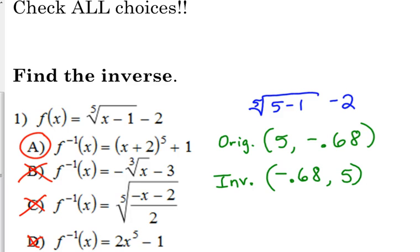So inverses, think opposites. Inverses, think opposites. So if you start with the fifth root, the opposite of that would be a fifth power. If you started with x cubed, the opposite of that would be a cubed root. Started with x squared, square root, vice versa. But then worst case scenario, put 5 into your original. Put that answer into your answer choices and see which one gives you 5 back that way. Does that make sense? So I've got some.